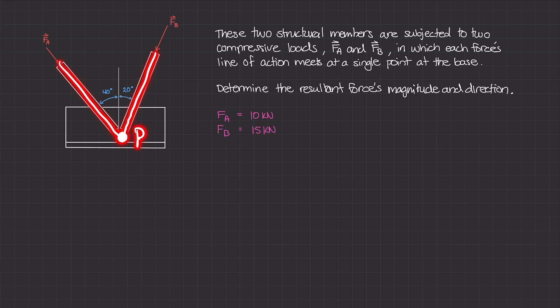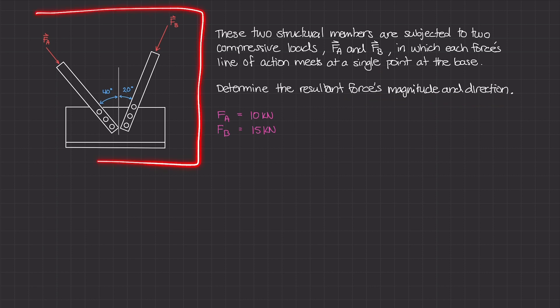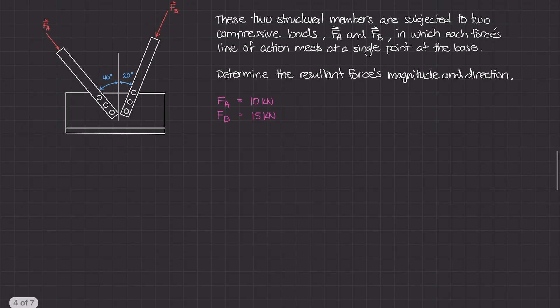Point P is also where our resultant force will act once we figure out its magnitude and direction. The first thing I want to do is draw a free body diagram that represents that single point where the two forces' lines of action meet. Down here, we can draw force A and force B.